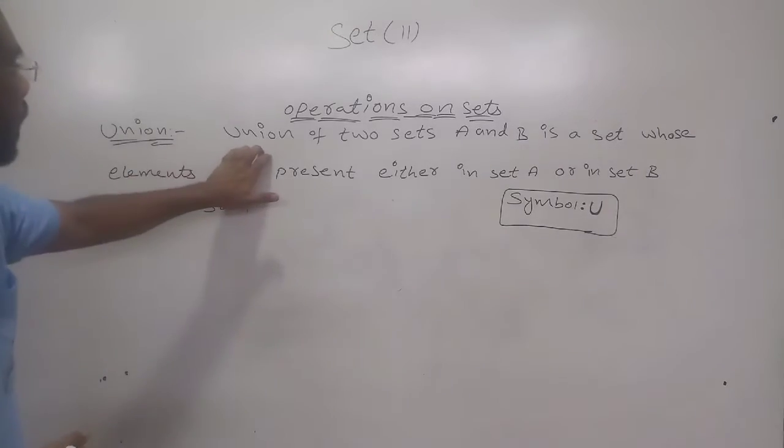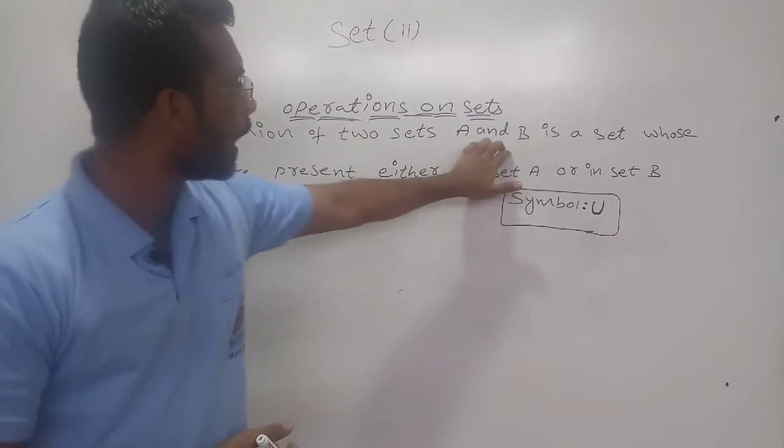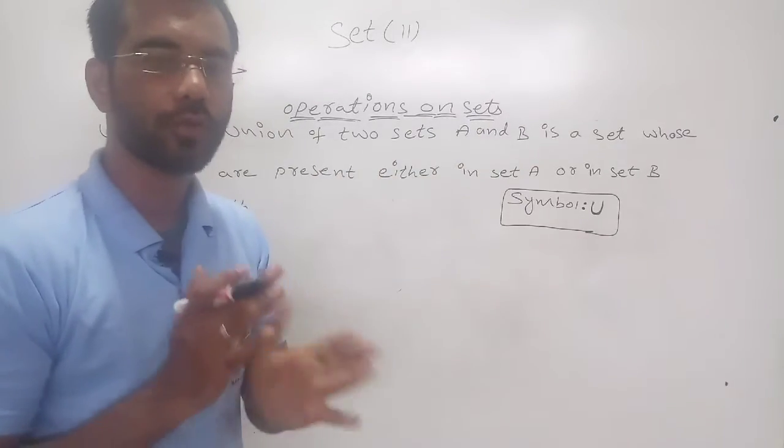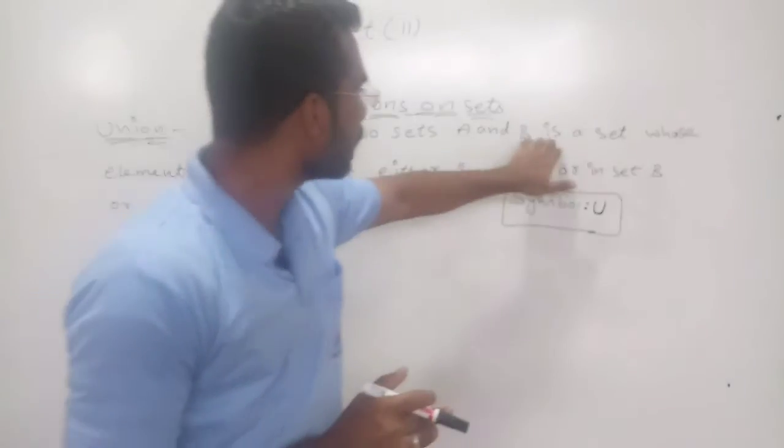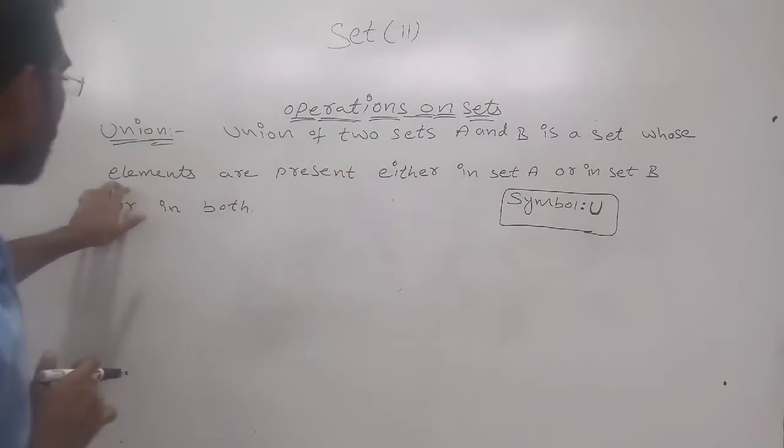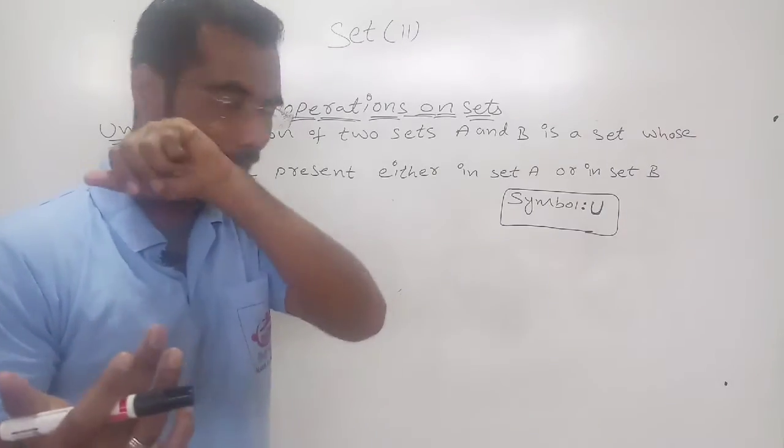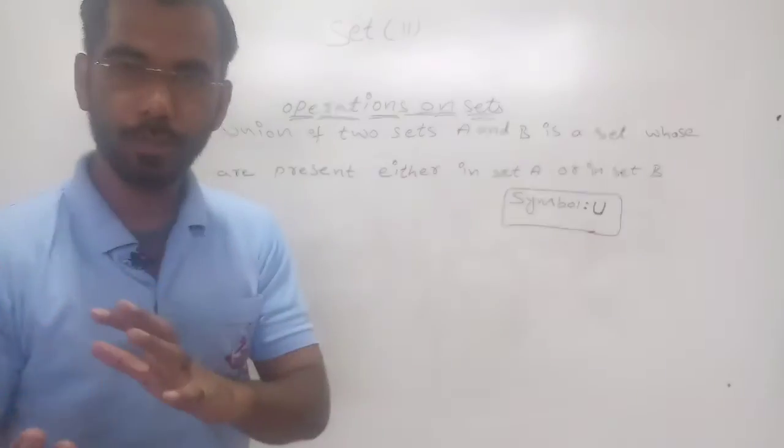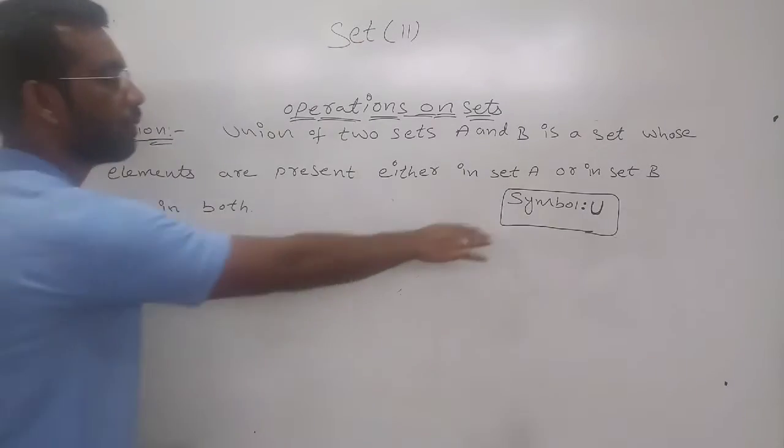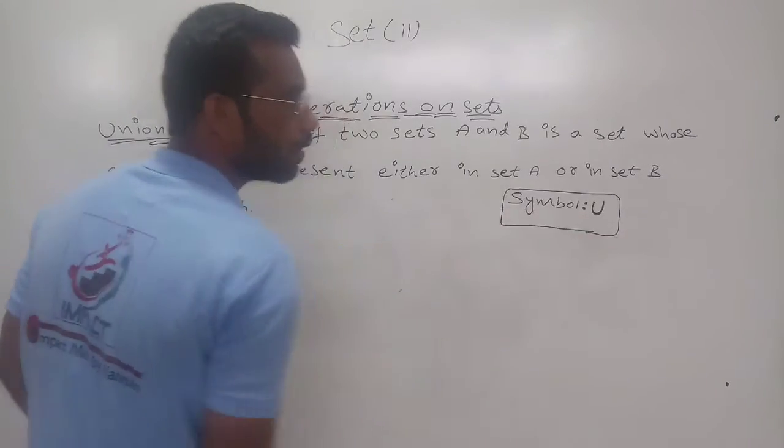Union of two sets A and B. If you are taking the union of two sets A and B, A union B is a set whose elements are present either in A, or in set B, or in both. And the symbol for the union is this one like U.